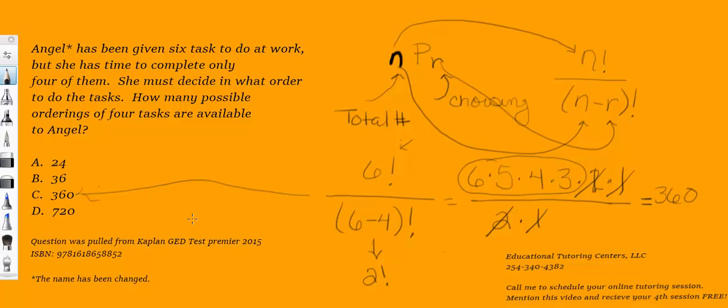So it says how many possible orderings of four tasks are available to Angel? There's a total of three hundred and sixty ways that she can order that work. You also could do these by hand if they were shorter problems, but being six tasks done four different ways, you'll be writing for a very long time, so it's best to use your formulas.